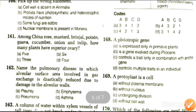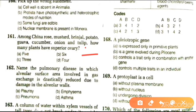Next question: among China rose, mustard, brinjal, potato, guava, cucumber, onion, and tulip, how many plants have superior ovary? The plants with superior ovary are China rose, mustard, brinjal, potato, onion, and tulip — six plants have superior ovary.